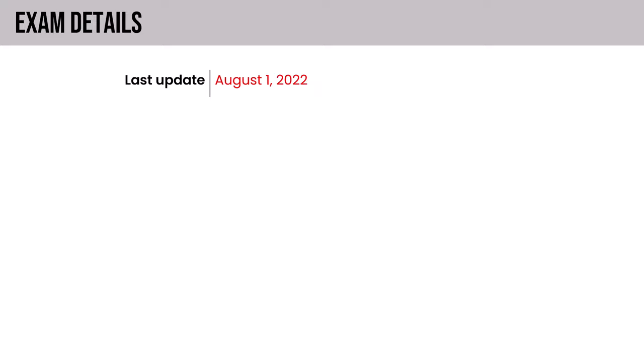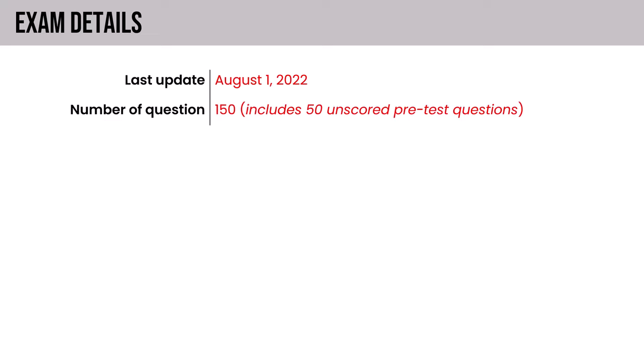The last update to the CCSP was in 2022 on August 1st, when the new version was released. It now includes 150 questions, up from 125, including 50 unscored pretest questions. According to ISC Squared, these are included to help protect the security and integrity of the exam — protecting against question dumps, sometimes called brain dumps, which are against the NDA of the exam.